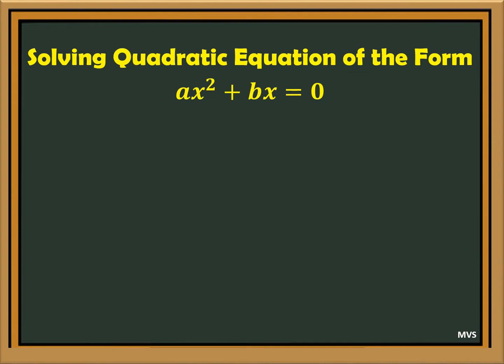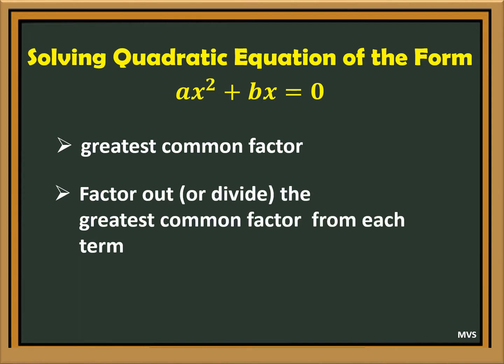In solving quadratic equations of the form ax squared plus bx is equal to zero: First, determine the greatest common factor. Second, factor out or divide the greatest common factor from each term. Third, solve for x.